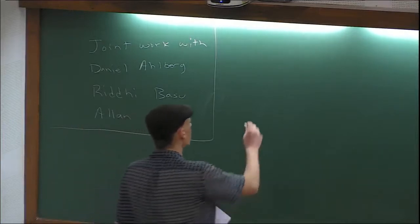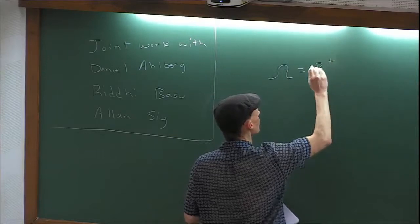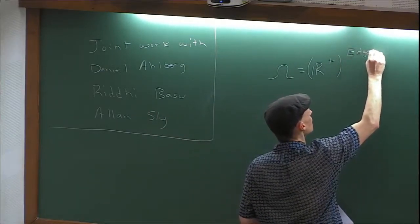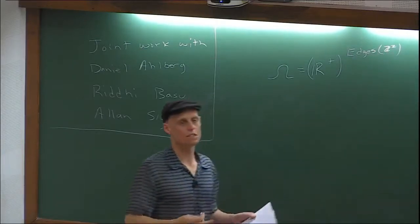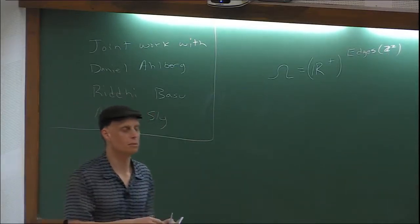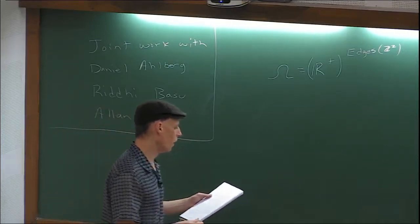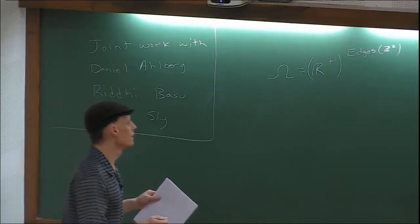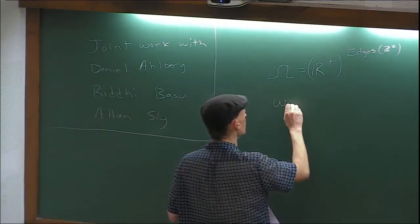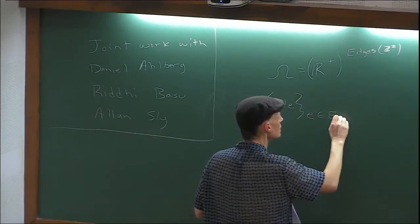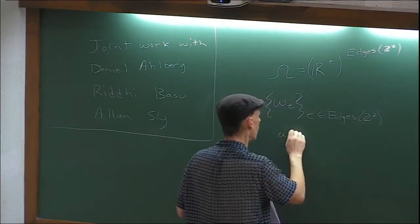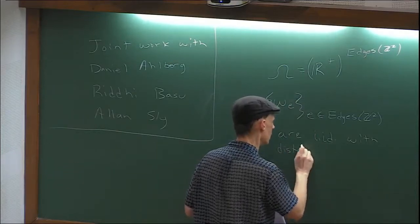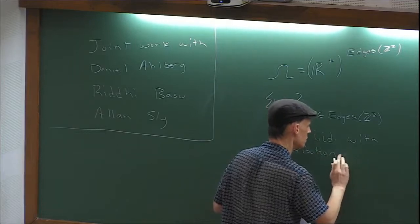So what is the model? We have our state space. We're going to take a graph for this talk — it will always be Z². On each edge of Z², we assign a positive number, which is the time that it takes to get across that edge. We put a probability distribution on this space. The random variables omega sub E, for E in the edges of Z², are IID with some distribution, which we'll call mu.